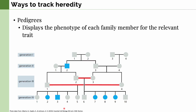In humans, since reproduction between individuals is more complicated, we use pedigrees instead of Punnett squares. These display the phenotype of each family member for the relevant trait. In this example, the trait shown is recessive deafness, shown in blue. Squares represent males and circles represent females. Lines between them indicate marriages, and vertical lines show their offspring. Red lines indicate marriages between blood relatives.